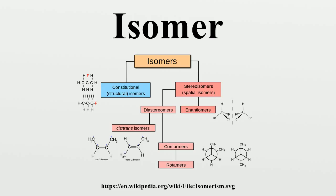Examples of isomers having different medical properties can be easily found. For example, in the placement of methyl groups in substituted xanthines, theobromine, found in chocolate, is a vasodilator with some effects in common with caffeine. But if one of the two methyl groups is moved to a different position on the two-ring core, the isomer is theophylline, which has a variety of effects, including bronchodilation and anti-inflammatory action.